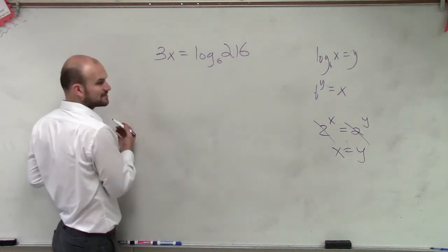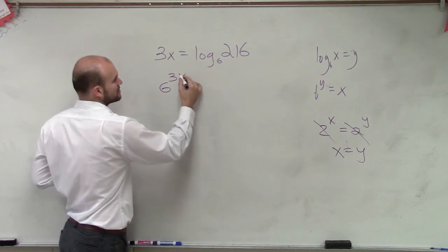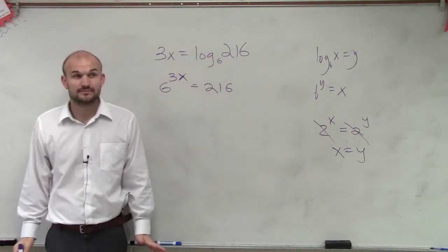So if I rewrite this in exponential form, this would be 6 to the 3x equals 216.